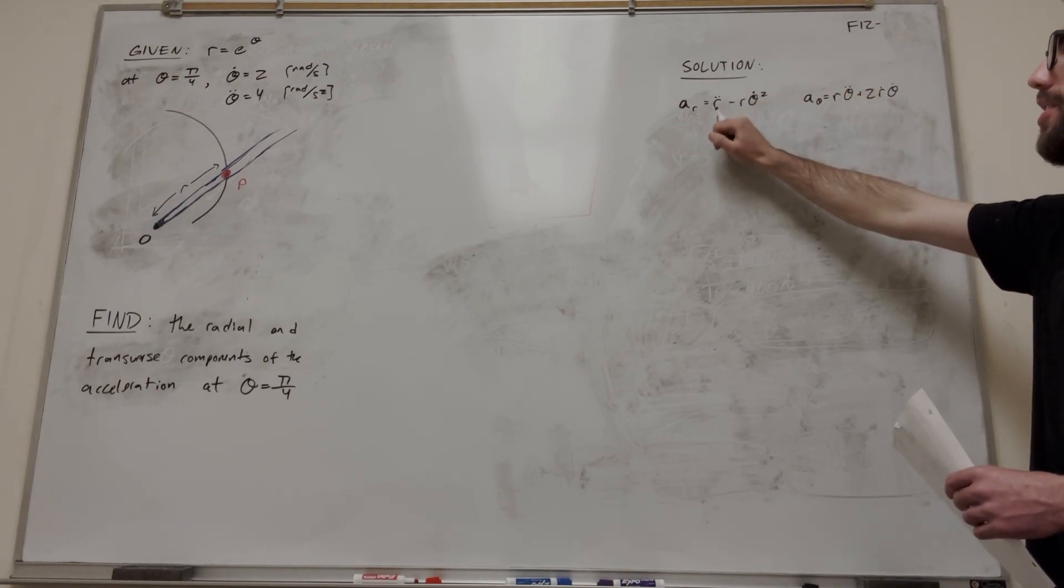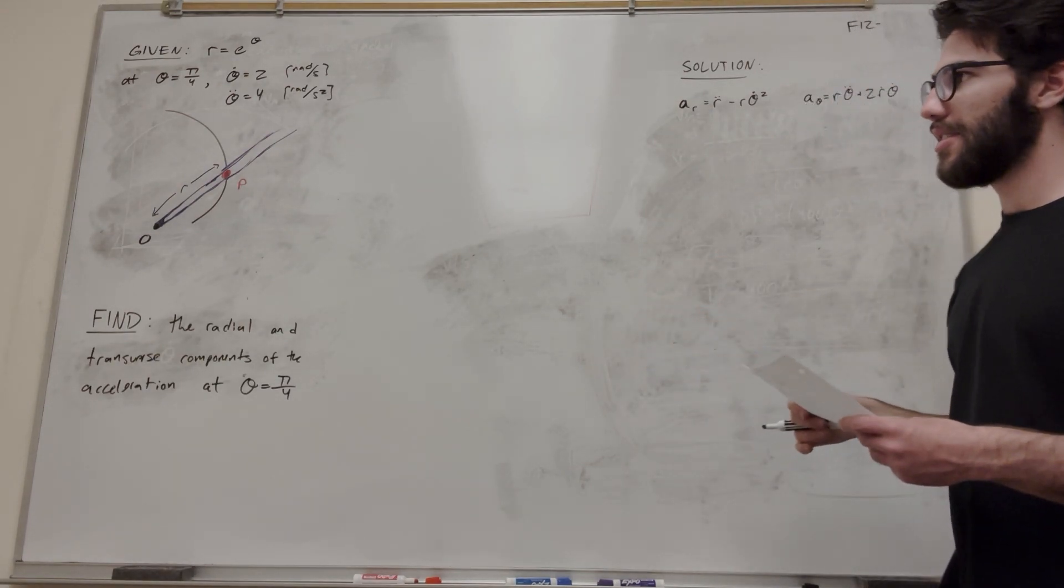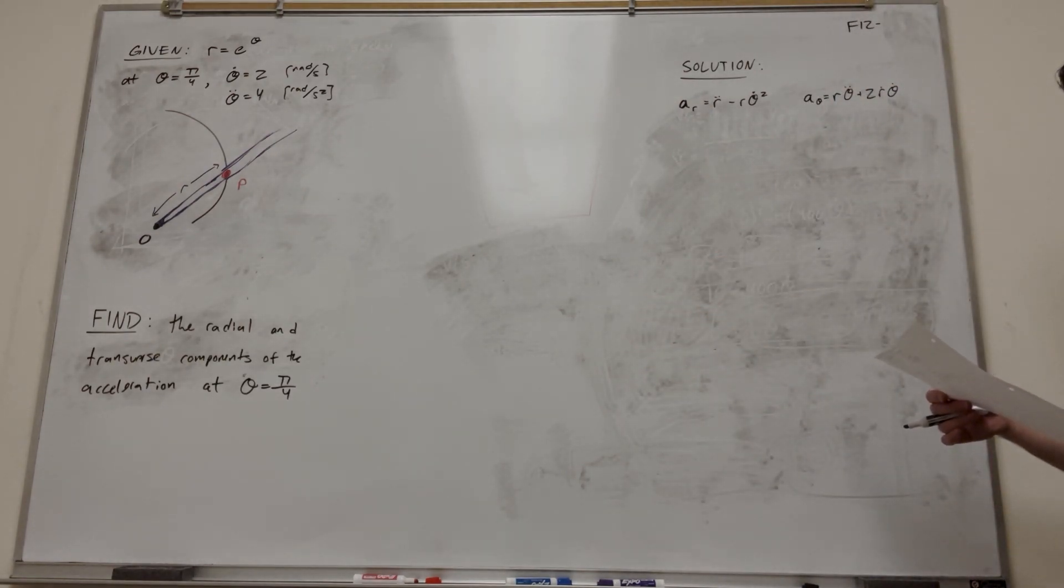What we don't have is r double dot and r dot, so we need to take the time derivative of the radius a couple times.